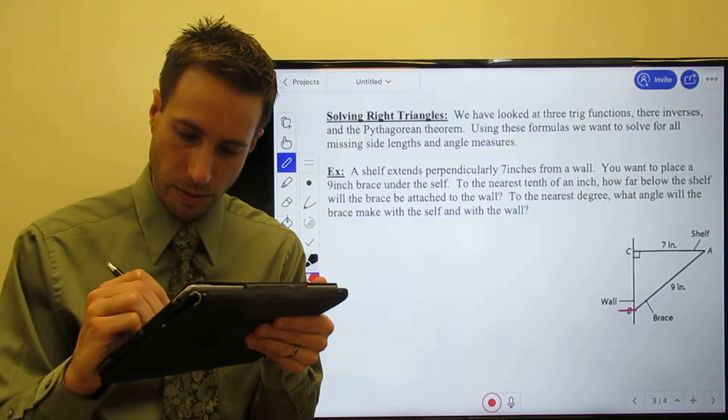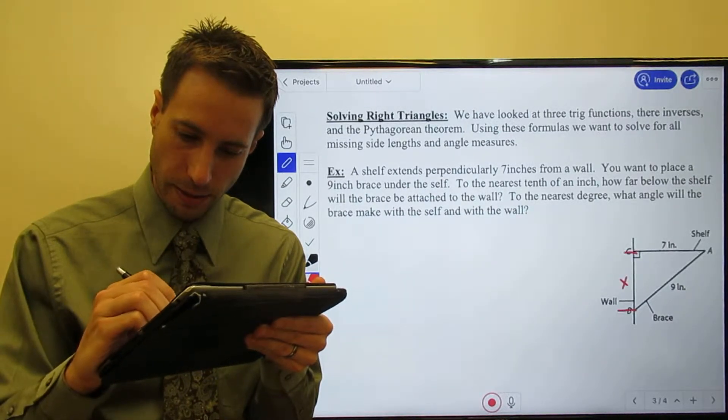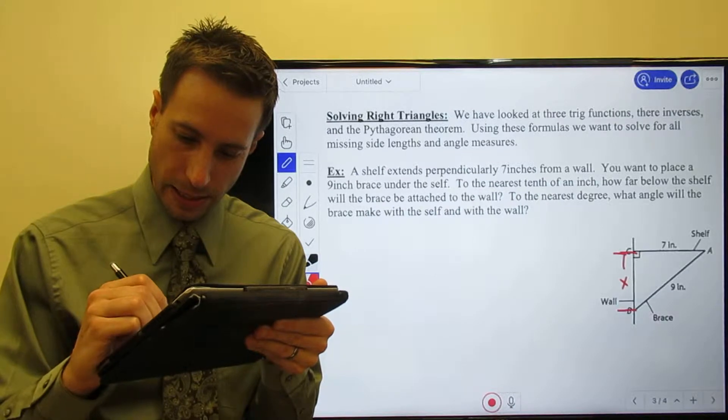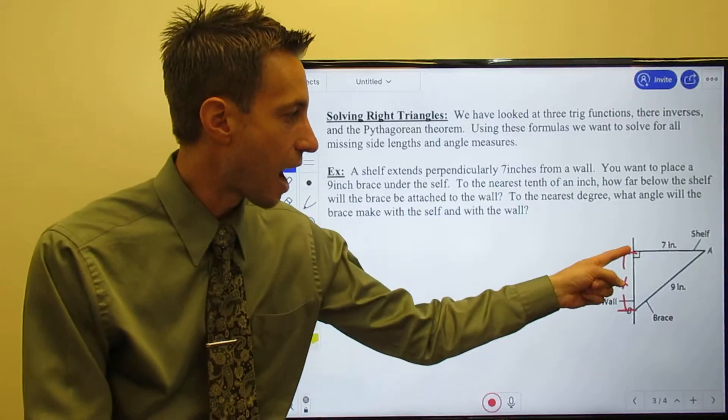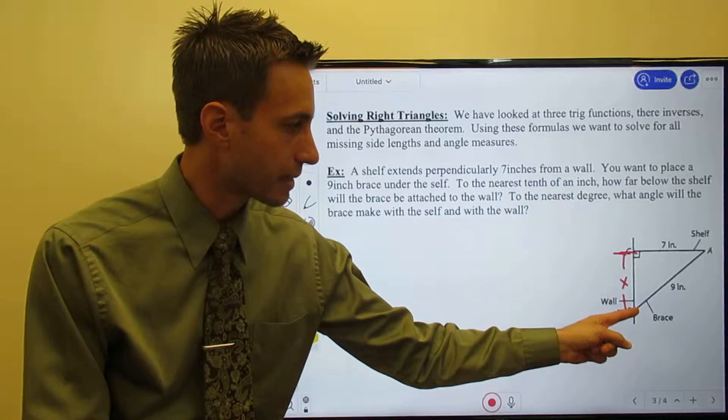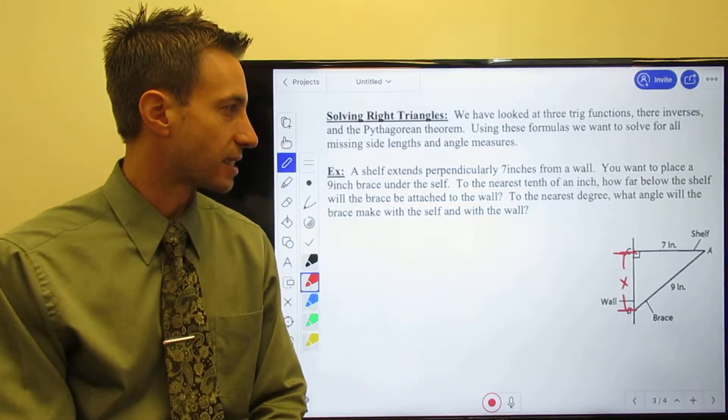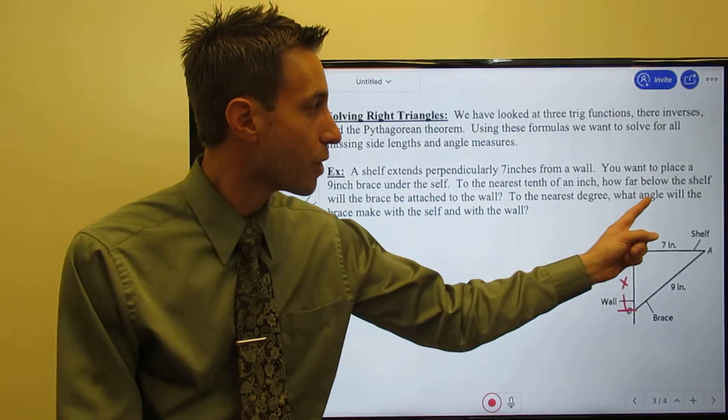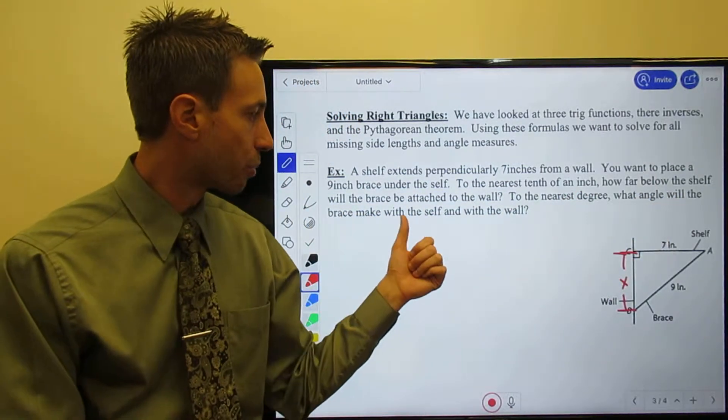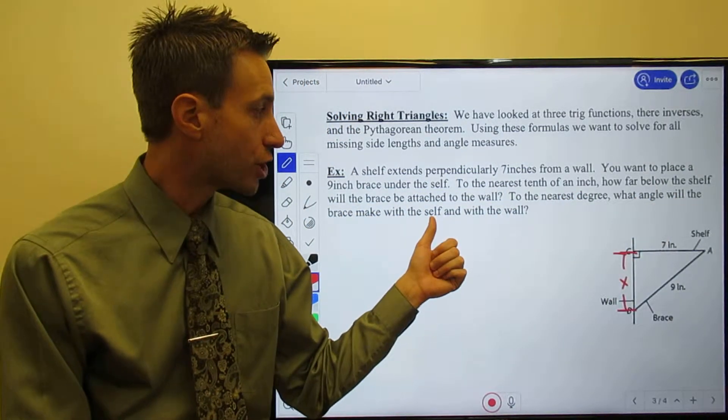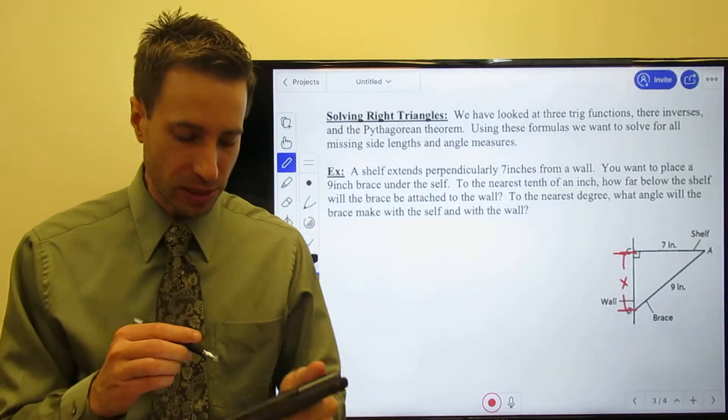That's what they're asking me to find: x, how far below the shelf is that brace attached to the wall. What is the length of that side? Then I also ask you to find, to the nearest degree, what angle will the brace make with the shelf and with the wall.